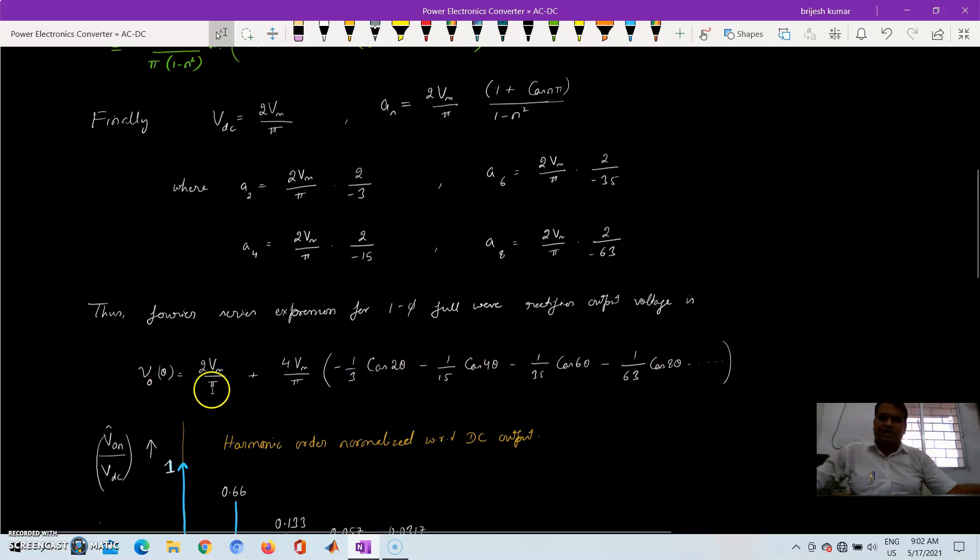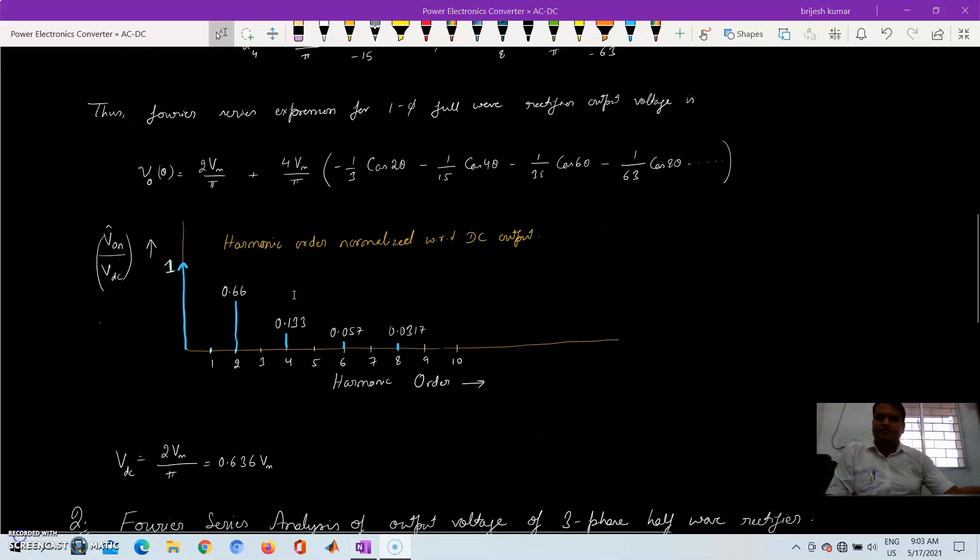The supply, we are getting a DC voltage output that is 2Vm by π and rest of the terms are AC. This is the harmonic order. We are normalizing it with respect to the DC output. Imagine that let the output is 100, that 1 is the DC. So we take the value Vn divided by Vdc and then see what are the harmonic components.